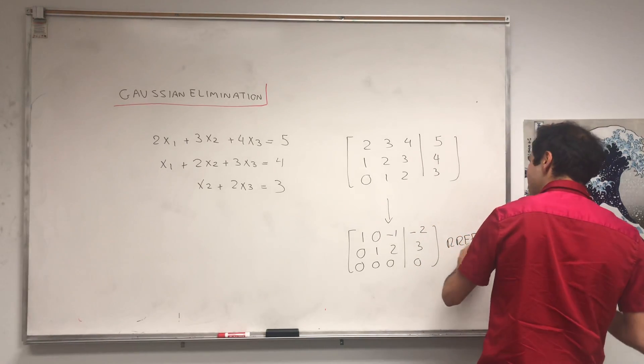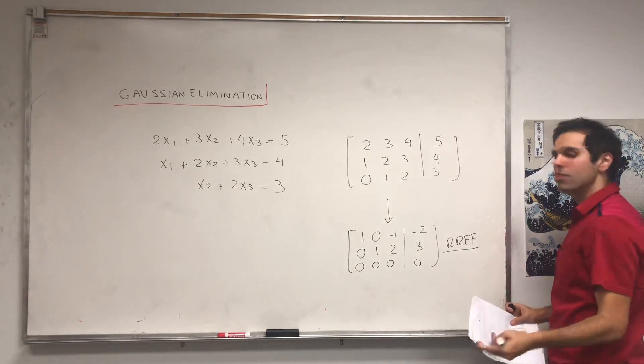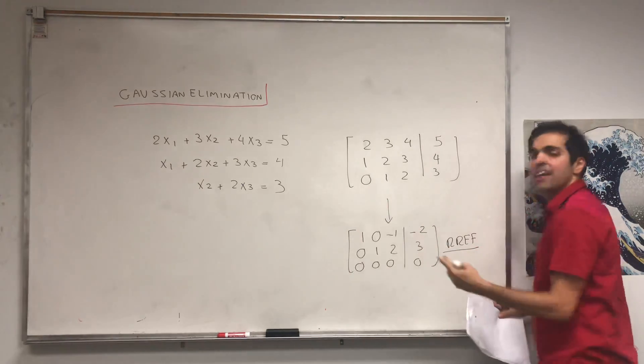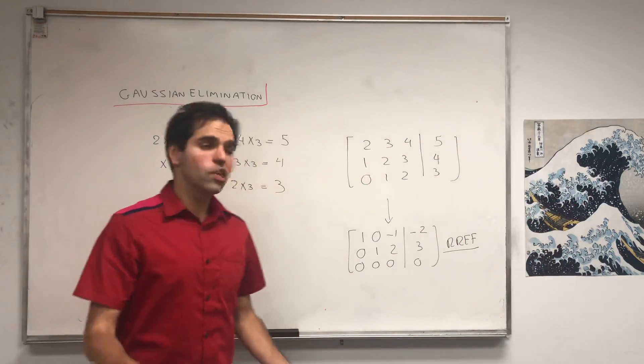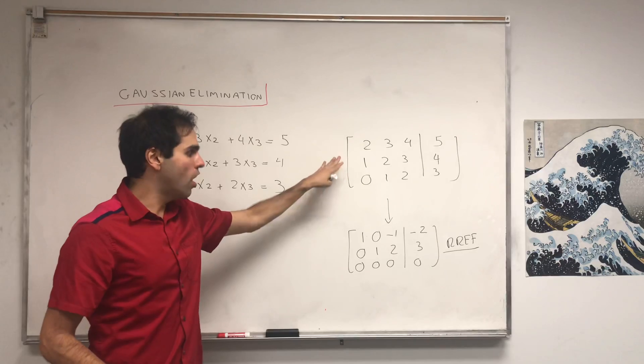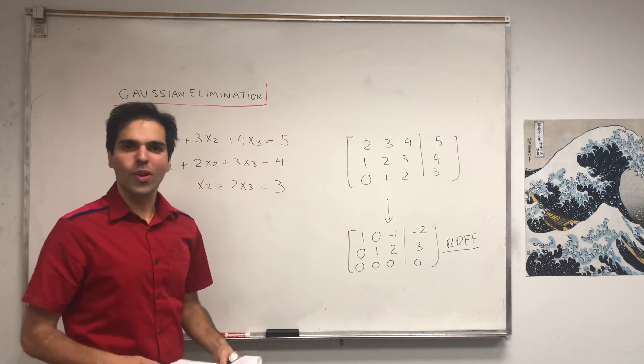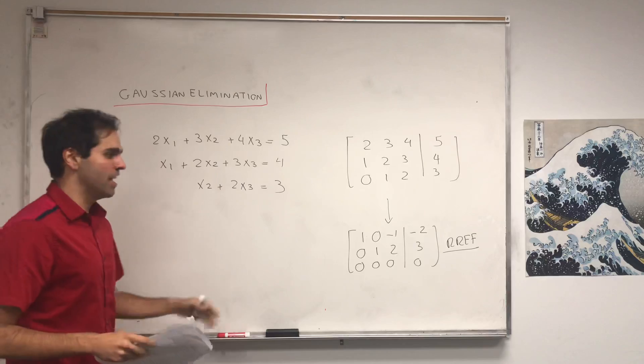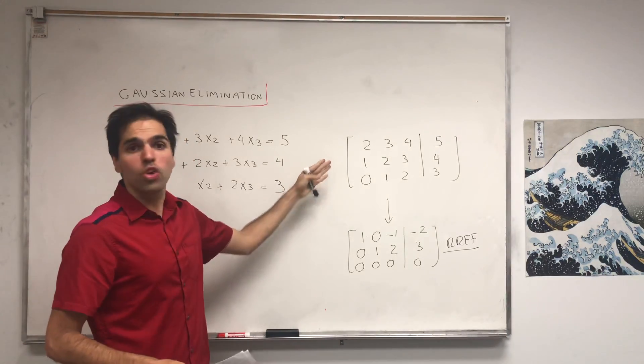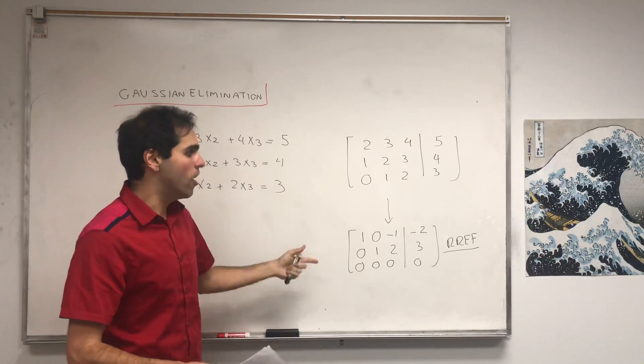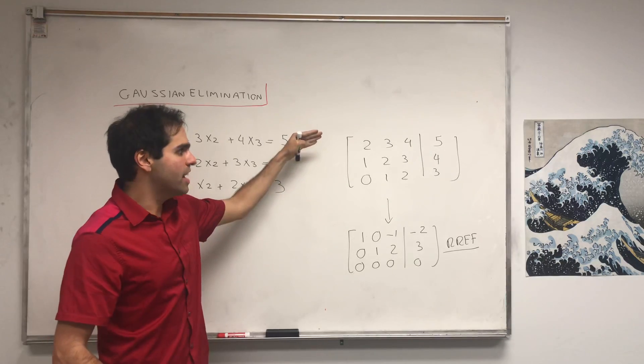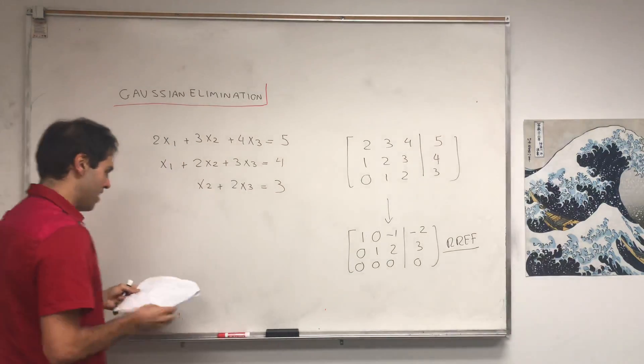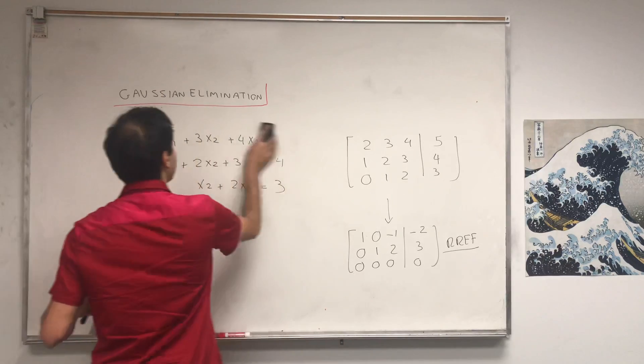So this is called reduced row echelon form, which is kind of a triangular form with the requirements that the pivots are 1 and the pivot columns are basically 1 and a bunch of 0s. Now, in another video, I've shown that you can always row reduce a matrix to become in reduced row echelon form. So this is not why we're here today.